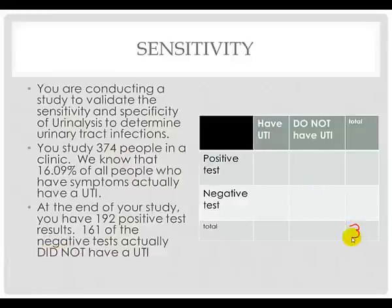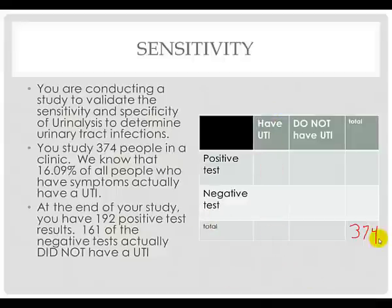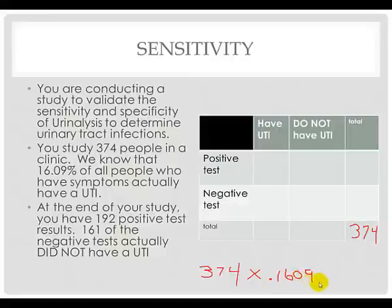We're going to study 374 people. We know that 16.09% of all people who have symptoms of a urinary tract infection actually have a UTI. We're only going to test people who have symptoms, so in order to find out how many people have the urinary tract infection, we're going to take 374 and multiply that by 0.1609, giving us about 60 people who have a urinary tract infection.